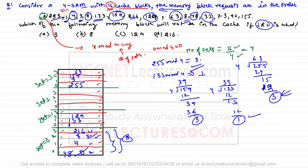Next is block 32, which maps to set number 0. Looking at the history, 216 was referenced early, 8 is fresh, 48 is fresh, but block 4 was referenced longest ago, so we replace block 4 with block 32.